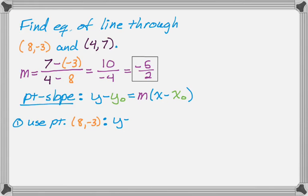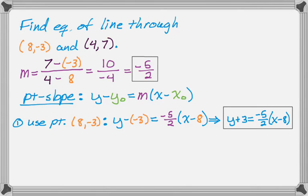And now I have to replace y₀ with negative 3, so the y-coordinate of my point equals m, which I calculated, the quantity x minus, and then replace x₀ with 8. Like that. This is messy. You never want to leave something with a minus and negative in it. So I'm going to rewrite it as y + 3 = -5/2(x - 8).